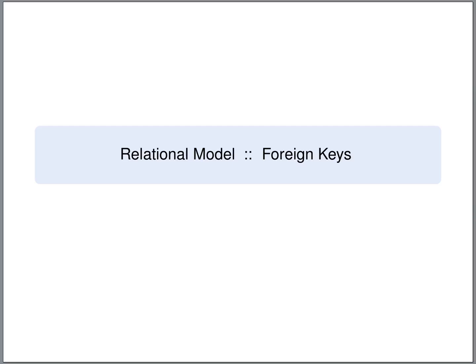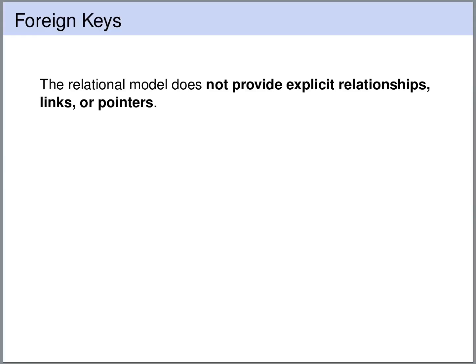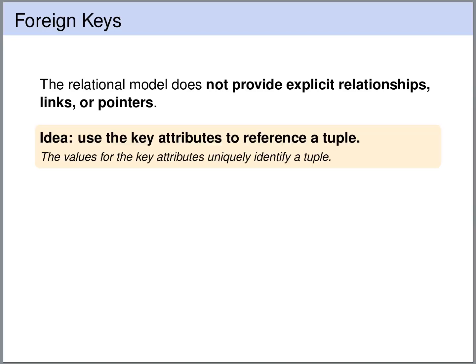Another important concept in relational databases are foreign keys. The relational model does not provide explicit links or pointers. So if we want to refer to a particular tuple in a table, the idea is we can use the key attributes of this table — we can use the values of the key attributes as an address identifying the tuple we want to refer to.